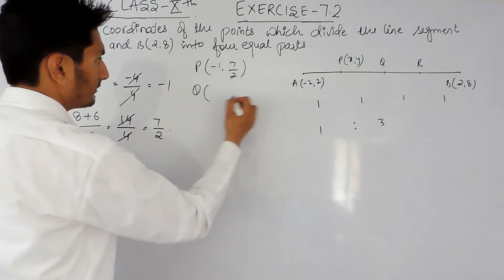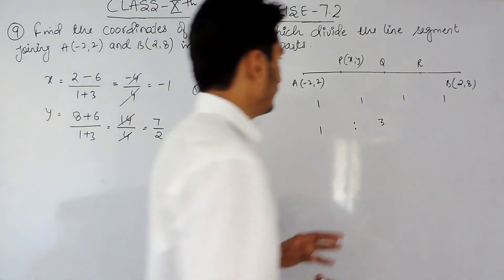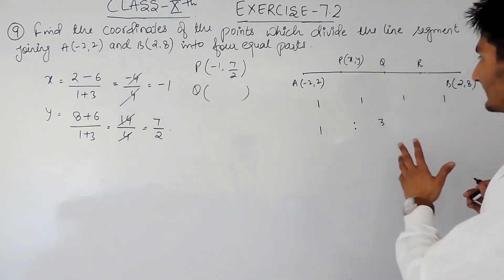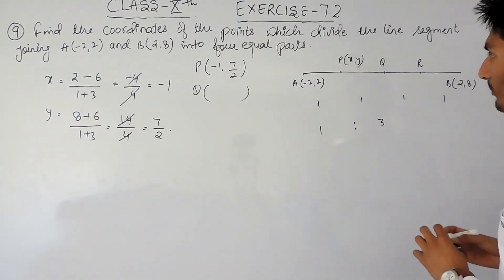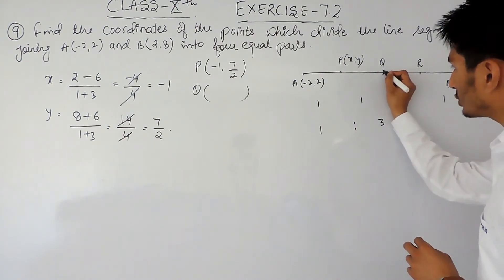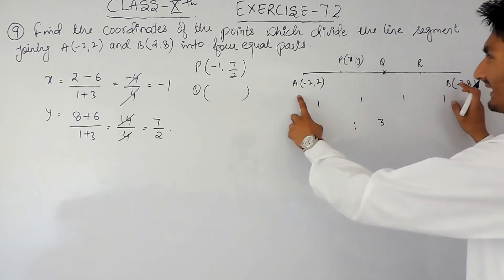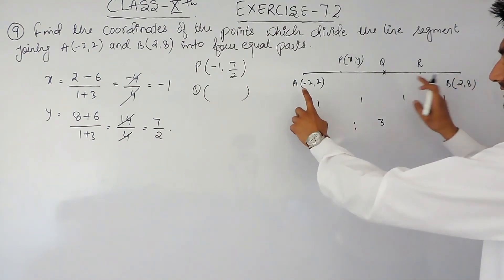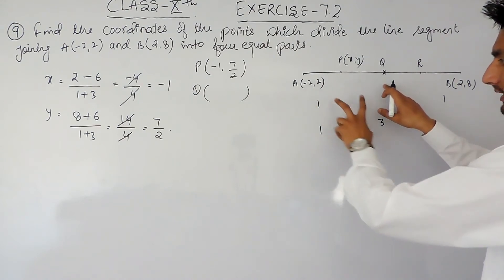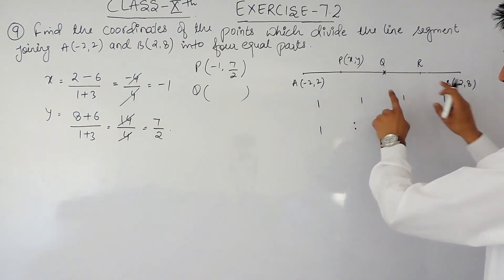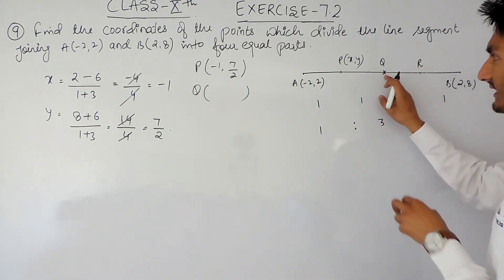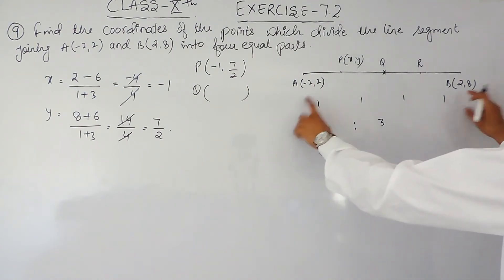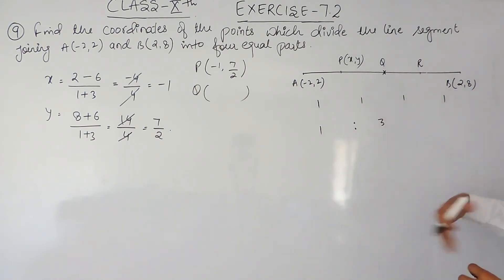Now I have to find the coordinate for Q. Looking at this figure closely, Q is the midpoint of the complete line segment AB, because the distance from A to Q is 2 units and the distance from Q to B is also 2 units. So Q acts as the midpoint for AB, and instead of using the section formula I can use the midpoint formula.